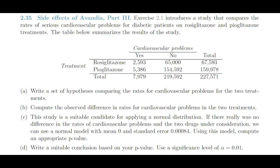In this video, we'll be dealing with question 2.35 from the prescribed textbook. The question says: Exercise 2.1 introduces a study that compares the rates of serious cardiovascular problems for diabetic patients on rosoglitazone and pioglitazone treatments. The table below summarizes the results of the study. Question A says: write a set of hypotheses comparing the rates for cardiovascular problems for the two treatments.